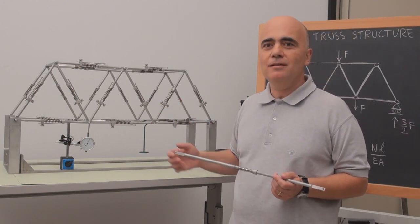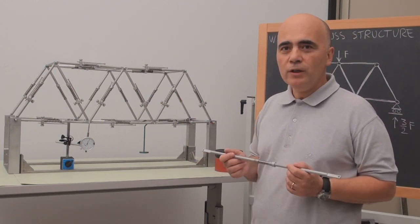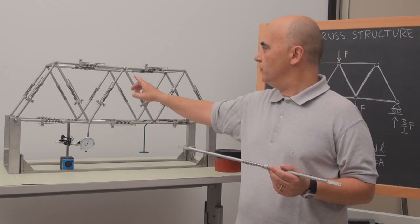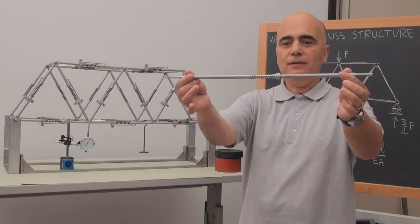We have designed and realized a model of a Warren Truss structure to teach students. The model is made with deformable cords like this.